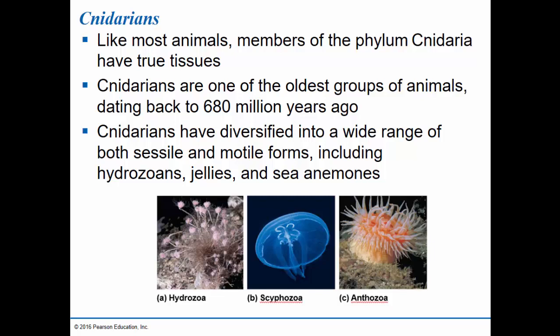The cnidarians consist of three different groups: the hydrozoa, which are sessile organisms with long tentacles that wave around in the water and collect food; the jellyfish, the scyphozoa; and the anthozoa, which include corals and sea anemones.